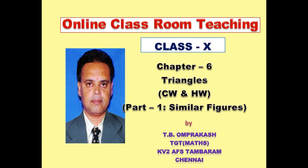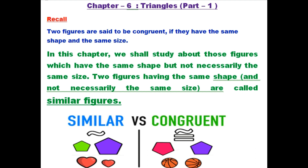Hi students, you are going to see a very important and interesting chapter: Triangles, Chapter 6, Part 1. What we have studied in lower class - what is a triangle? A triangle is a three-sided polygon, that means three lines intersecting at three different points, where you get three sides and three angles.